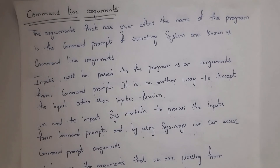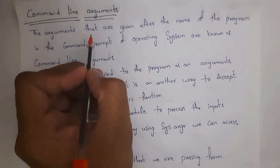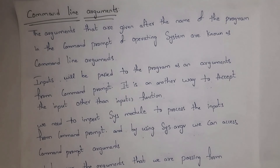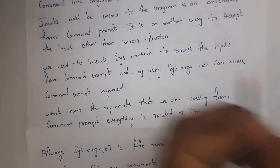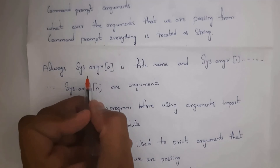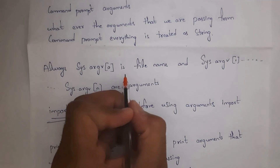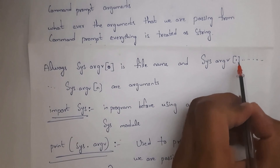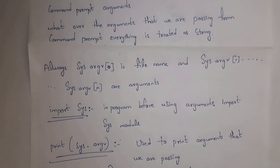The definition of command line arguments: the arguments that are given after the name of the program in the command prompt of the operating system are known as command line arguments. We need to import the sys module to process inputs from the command prompt. By using sys.argv, we can access command prompt arguments. Whatever arguments we pass from the command prompt, everything is treated as string. Always sys.argv[0] is the filename, and sys.argv[1], sys.argv[2], and so on are our arguments.